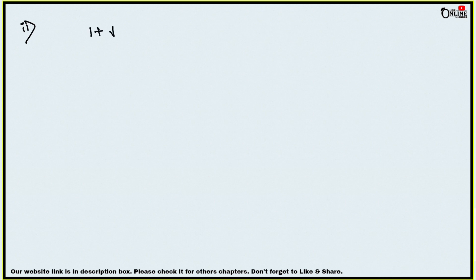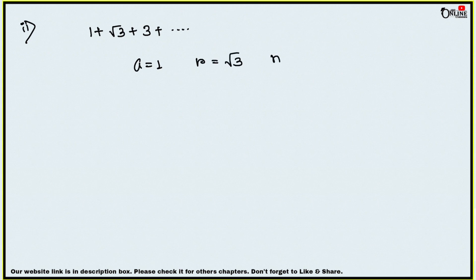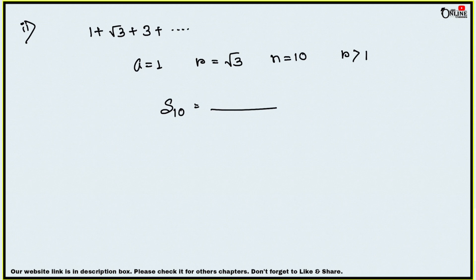Sum number 2: find the sum of 10 terms of the GP series 1 + √3 + 3 + ... up to 10 terms. Here a = 1, r = √3, n = 10. Since r > 1, we use S₁₀ = a(rⁿ − 1)/(r − 1). So S₁₀ = 1 × ((√3)¹⁰ − 1) / (√3 − 1).